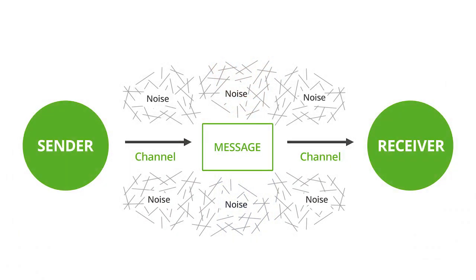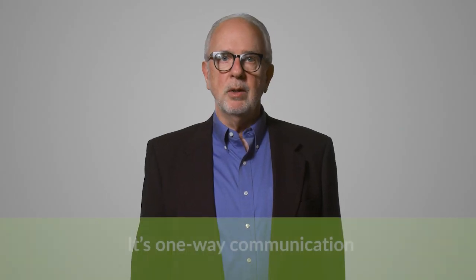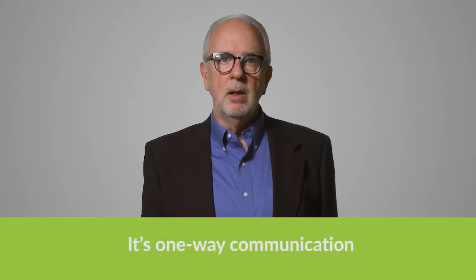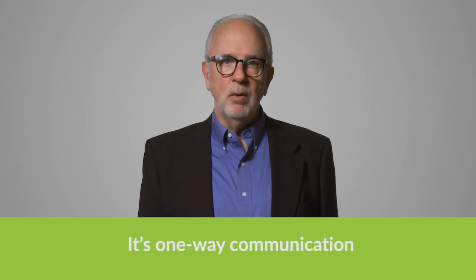The linear model is one-way, non-interactive communication. Examples could include a speech, a television broadcast, or sending a memo. In the linear model, the sender sends the message through some channel, such as email, a distributed video, or an old-school printed memo.